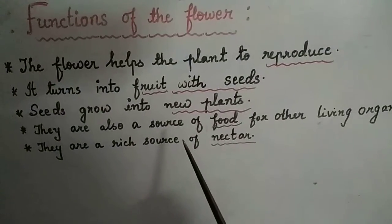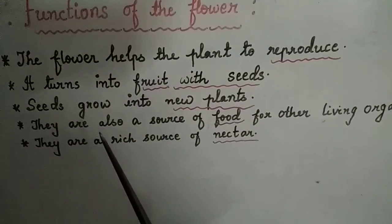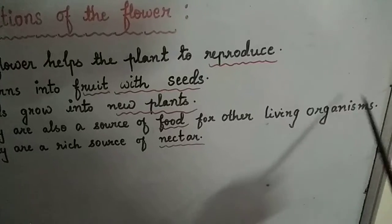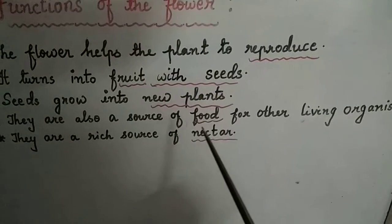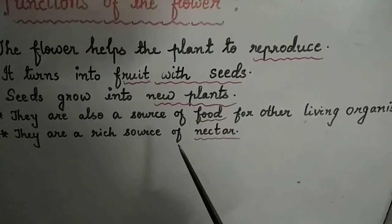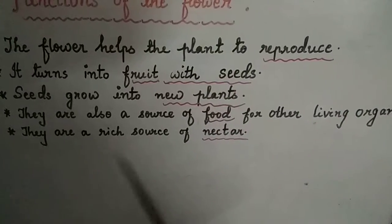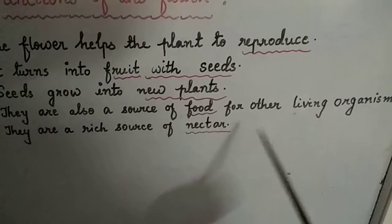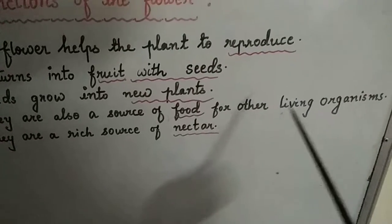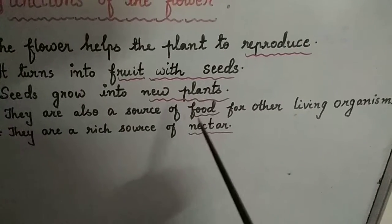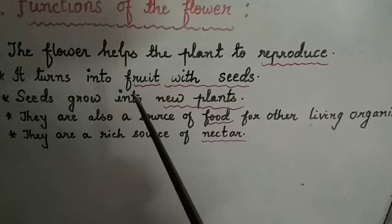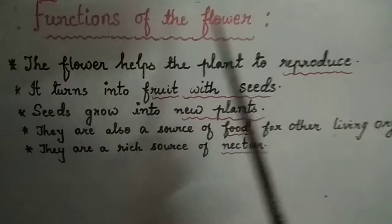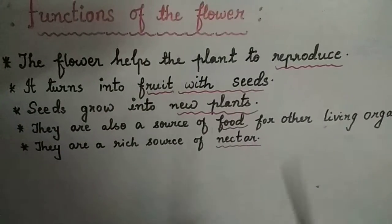There are other functions of the flower also. Flowers are also a source of food for other living organisms. Some insects and birds take nutrients from the flower, mainly called nectar, because flowers are a rich source of nectar. These living organisms sit on the flower and take the nectar and other important nutrients, which serves as food for them.